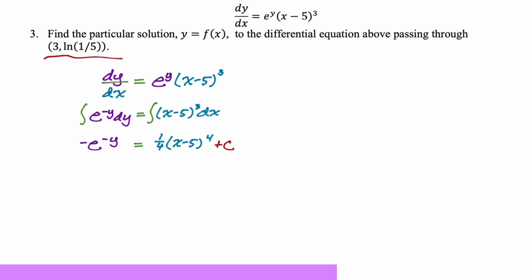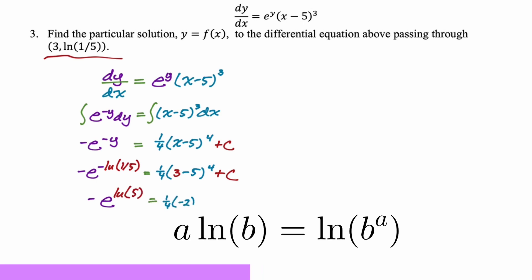I'm going to actually solve for c here because it's never really going to get easier. So x is three. y is the natural log of one fifth. So I'm replacing y with the natural log of one fifth and then three minus five, fourth plus c. So a property of natural logs is that coefficients become exponents. So that negative in front of the natural log can become the exponent of one fifth. So it becomes one fifth to the negative first and one fifth to the negative first is five. So on the left, I'm just going to have negative e to the natural log of five. The right hand side, we're just simplifying. Negative two to the fourth is 16. 16 divided by four is four. E to the natural log of whatever is just whatever because e and natural log are inverses of each other. So on the left, we get negative five equals four plus c. So c is going to be negative nine.